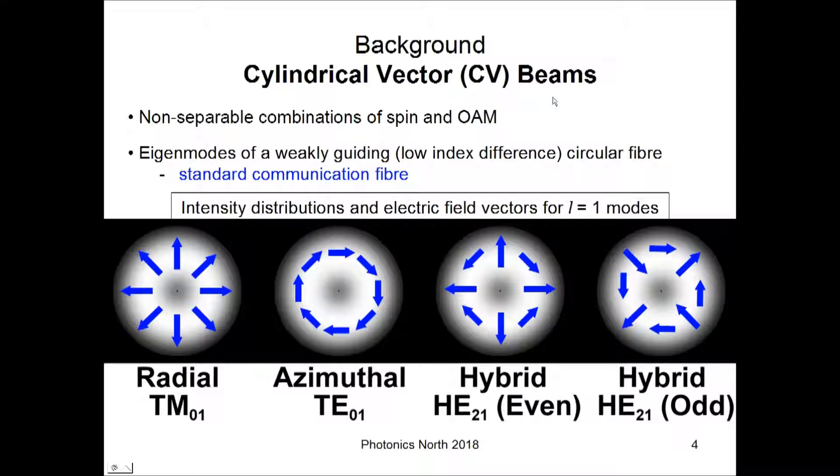Cylindrical vector beams are a non-separable combination of spin and OAM. What this means is that the polarization of a CV beam will vary across the transverse profile of the beam. Here are some examples. You can have a radial mode, which has the polarization always pointing away from the center of the beam, the azimuthal mode, where the polarization is directed around the beam axis, and these more complicated hybrid modes.